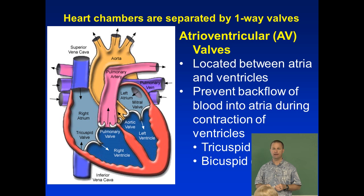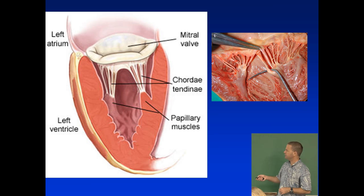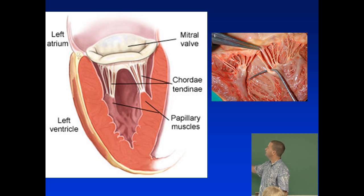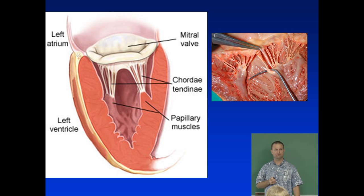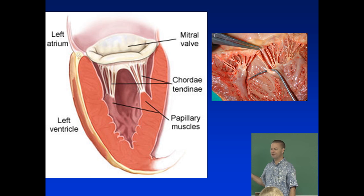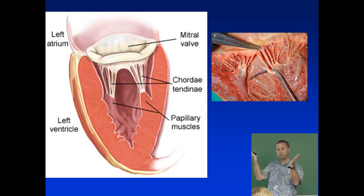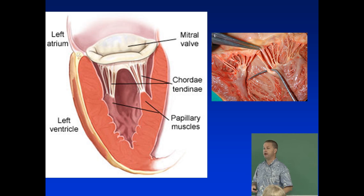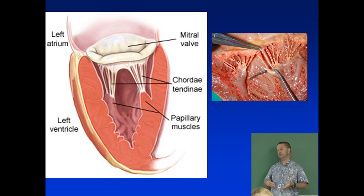The mitral valve is a bicuspid valve. Attached to it are structures called the chordae tendineae — these are your 'heart strings.' They're tendinous cords that support the valve and prevent it from prolapsing, like guy wires attached to papillary muscles, keeping the valves from blowing back in the wrong direction. Sometimes a valve is 'incompetent,' meaning it's not working properly and is letting blood flow backward when it shouldn't.